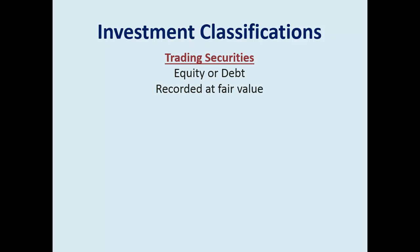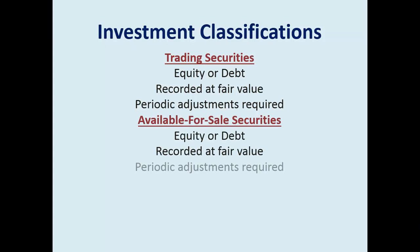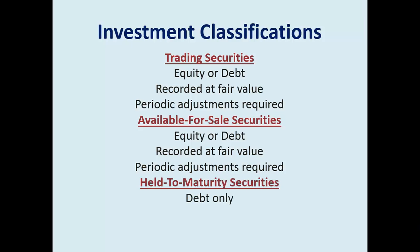Trading can be either stock or bonds, recorded at fair value, and periodic fair value adjustments are required. The same applies to available for sale. Held to maturity is different — it's bonds only, since stock does not mature. It's recorded at amortized cost.